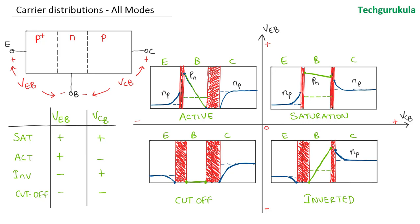Overall, we have seen how the minority carrier distribution would be in different regions — emitter, base, and collector — in different modes of operations. Thank you.